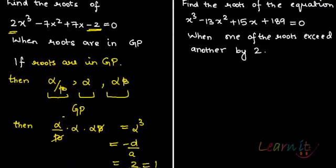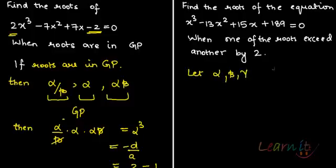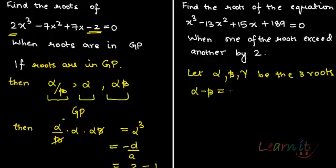That's how you solve when roots are in GP. Now let's look at another example where we are given the difference between two roots. We have the cubic equation x³ - 13x² + 15x + 189 = 0, and one root exceeds another by 2, meaning the difference between two roots is 2. Let α, β, γ be the three roots. Assume α - β = 2, so α = β + 2.